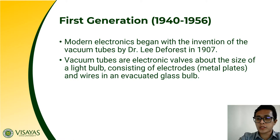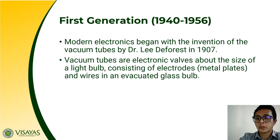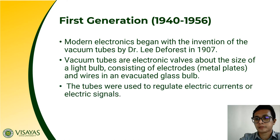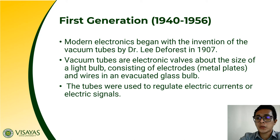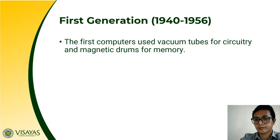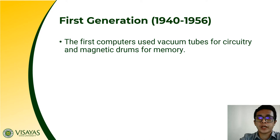Vacuum tubes are electronic bulbs about the size of a light bulb, which consist of electrodes and wires in an evacuated glass bulb. These tubes were used to regulate the electric currents or electric signals. In the first computers, vacuum tubes were used for circuitry and magnetic drums for memory.